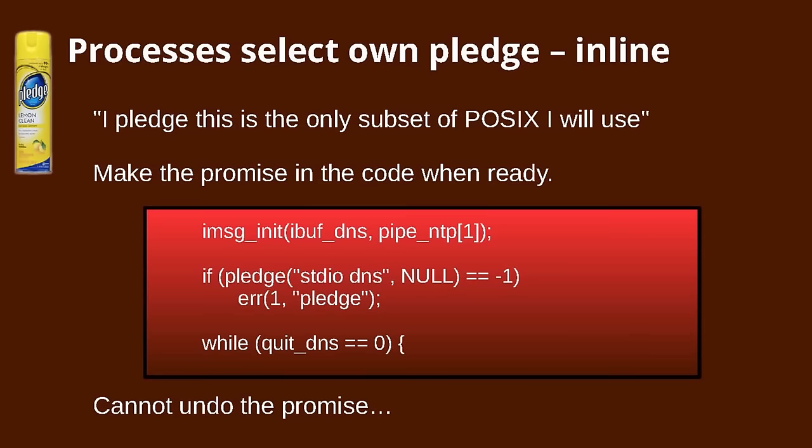Unlike Seccomp and other tools, which are usually an outside monitor, with Pledge the idea is that a process goes and says: from this moment in the code, I promise I will only use these subsets of POSIX — I will not use anything else. In our NTP daemon, one process says it only needs standard IO and DNS features. It cannot undo that promise once made, and if it violates it, it gets killed.